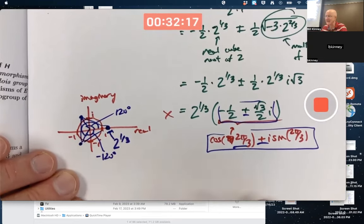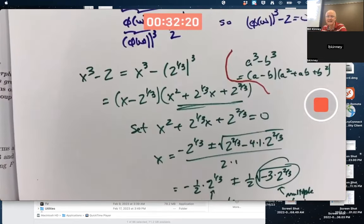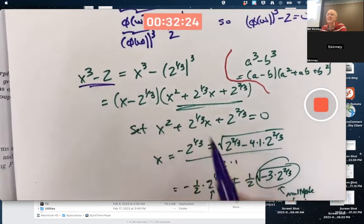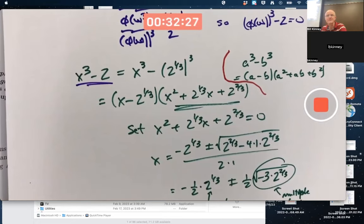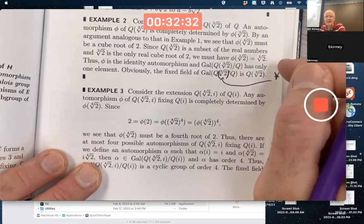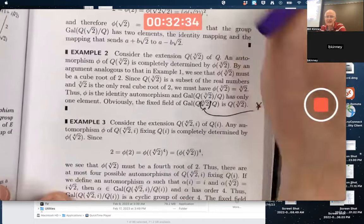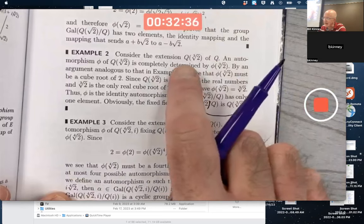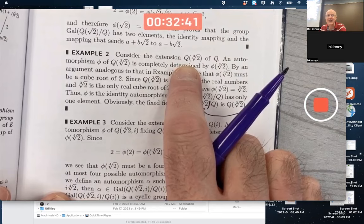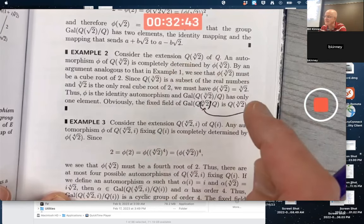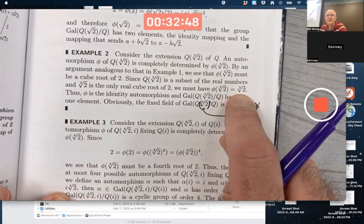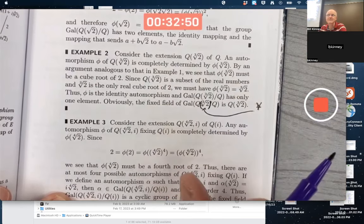Anyway, that was an aside worth doing to emphasize that we can find the other roots of this. But they're not rational numbers. They're not even real numbers. And since phi here is assumed to map this field to itself, the output has to be a real number that's not complex. It has to be a real number. It's got to be just the real cube root of 2. This is a one element Galois group.